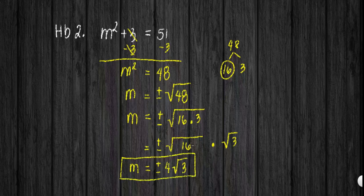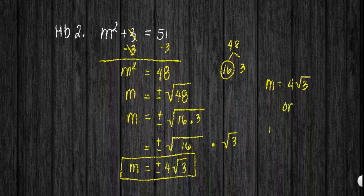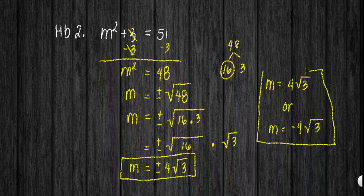To find the two solutions: m is equal to positive 4 square root of 3, and m is equal to negative 4 square root of 3. These are our final answers for example number 2.